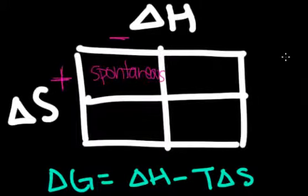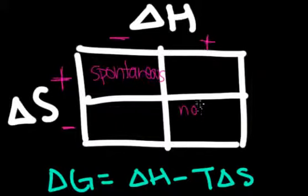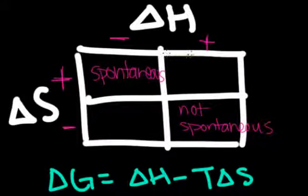Similarly, we can see what happens if the change in enthalpy is positive and the change in entropy was negative. This will never be spontaneous because it's not thermodynamically favored. Now, let's look at this top right square.